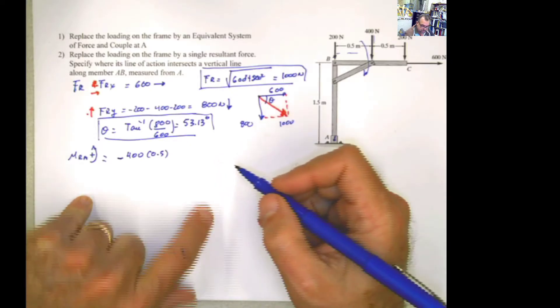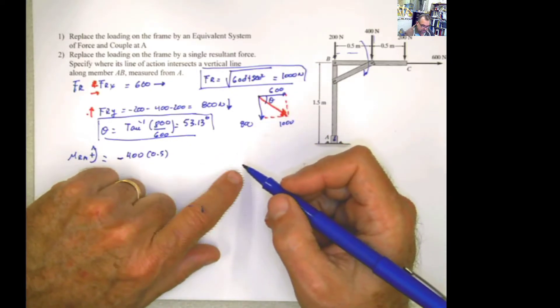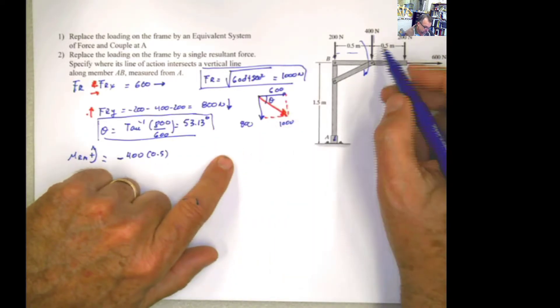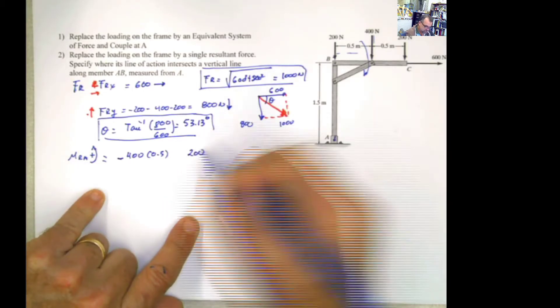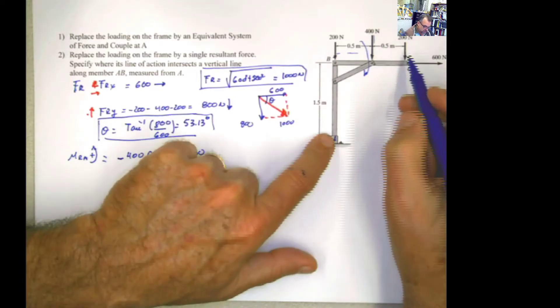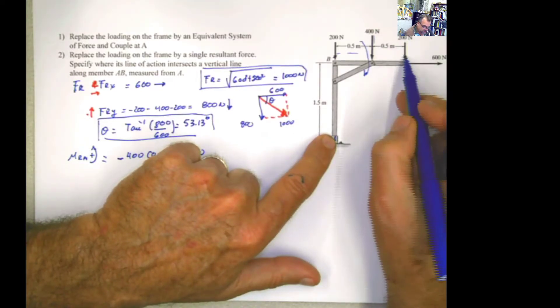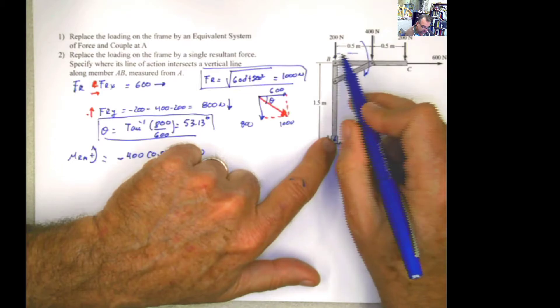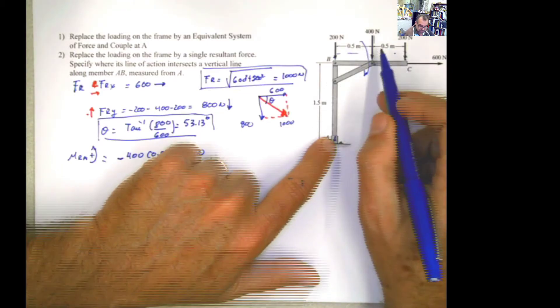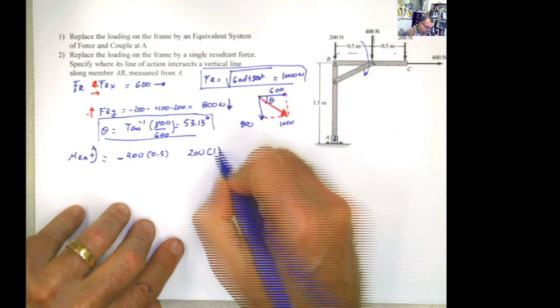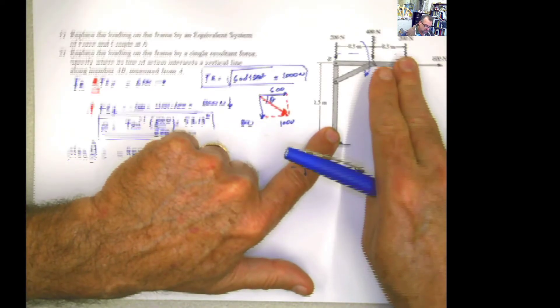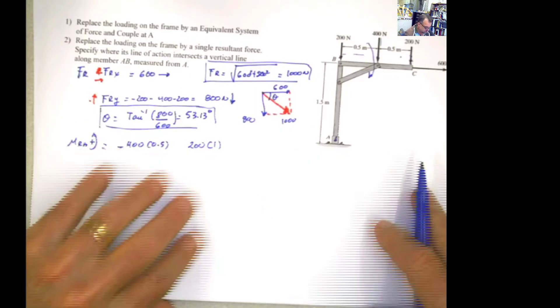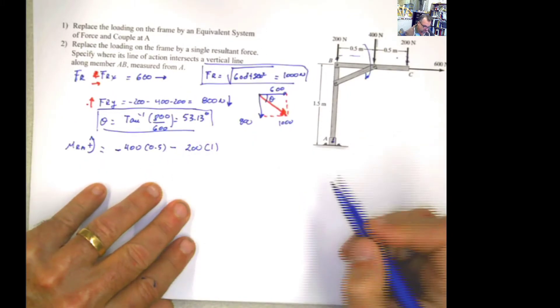What else? The next part is a, the next force is this one, 200. Vertical force here. Horizontal distance between the vertical force and the point A is 1, 0.5 plus 0.5. So that is 1. And then apply the force again. Put your finger at the point that you want to calculate the moment. Apply the force. Rotation clockwise. Clockwise, according to our convention, is negative.